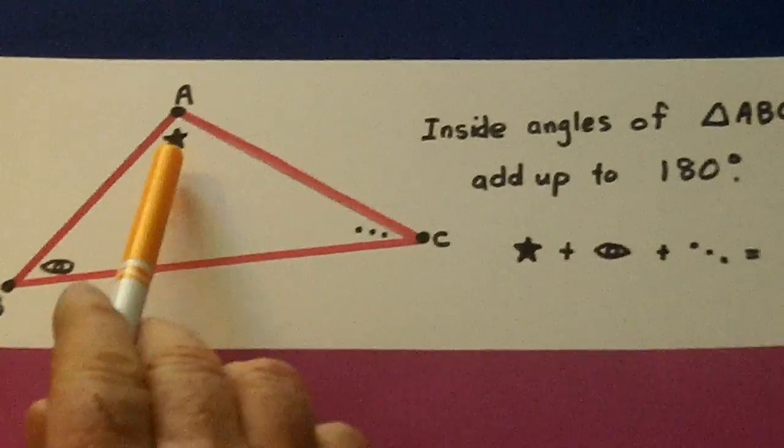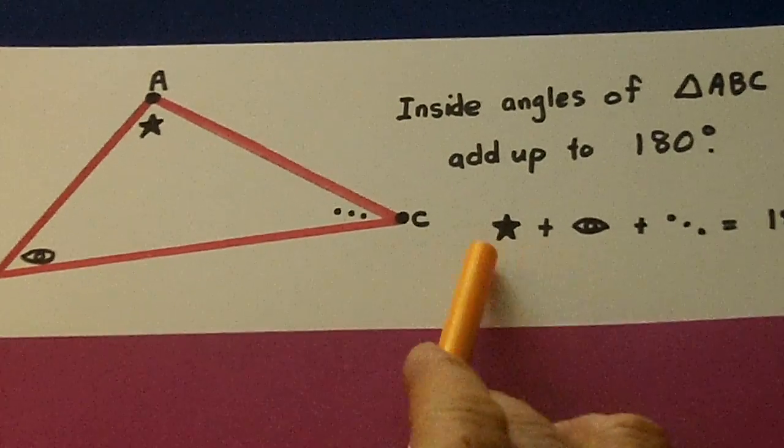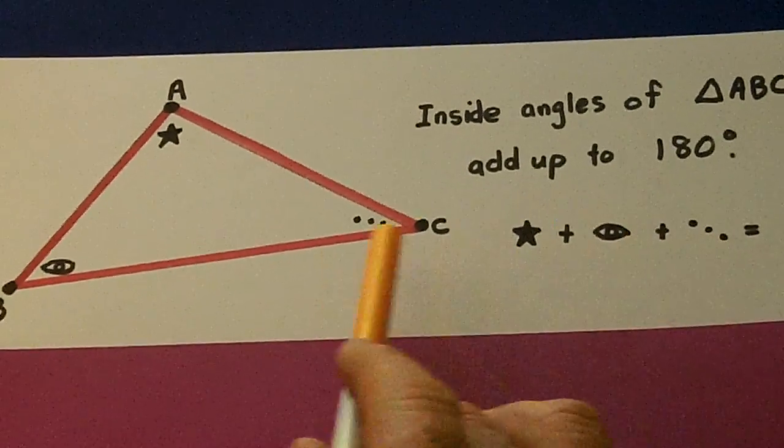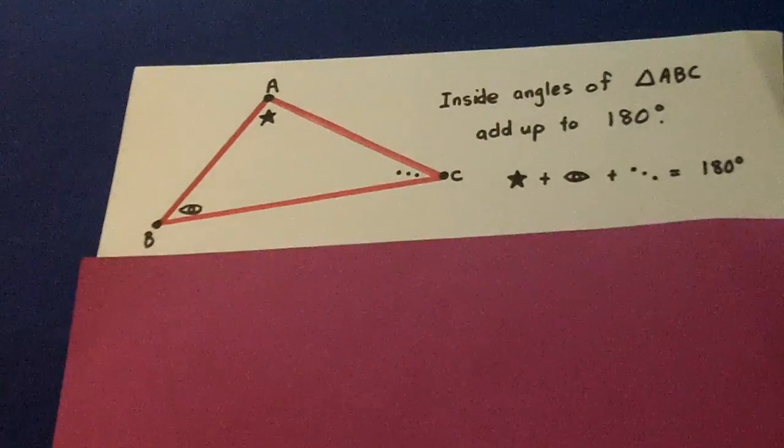So if we take the star, the eye, and the three stars of Orion's belt, those inside angles of the triangles add up to 180 degrees.